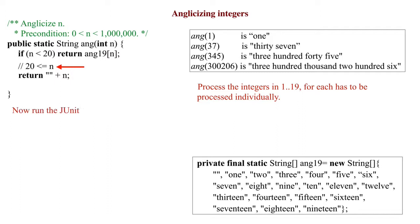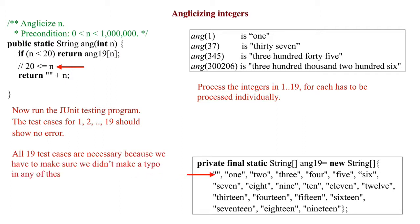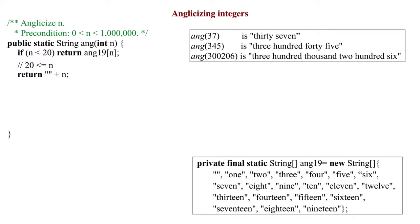Now, the first 19 test cases in our JUnit testing class should work. Note that all 19 cases are necessary. Having all 19 is the only way to make sure we spell the words 1, 2 through 19 correctly in the declaration of ang19. We're finished with n at most 19.